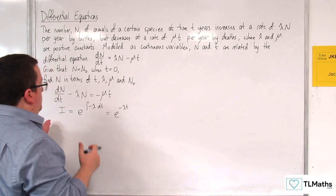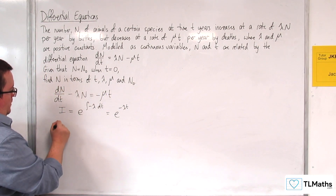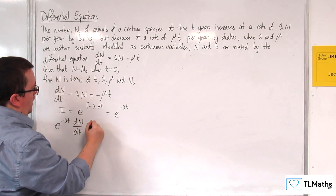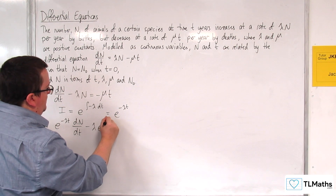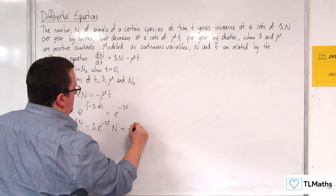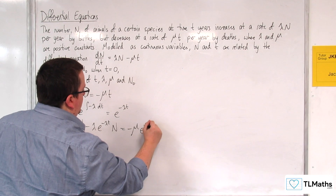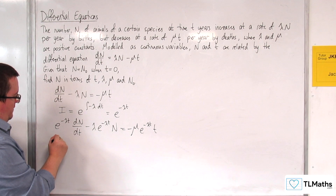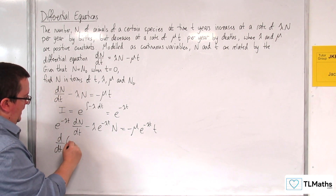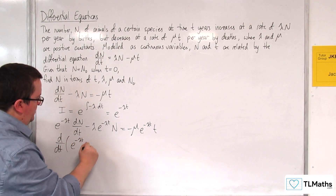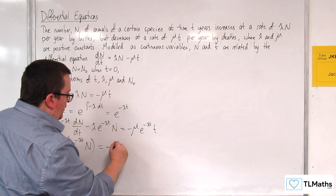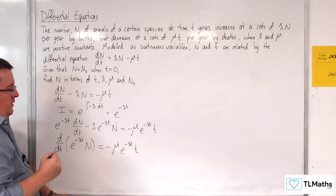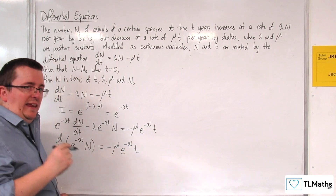I'm going to multiply through the equation by the integrating factor e^(−λt). So we get e^(−λt) · dn/dt − λe^(−λt) · N = −μe^(−λt) · t. The left-hand side is now a perfect derivative: d/dt of [e^(−λt) · N], and the right-hand side is −μe^(−λt) · t.